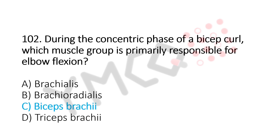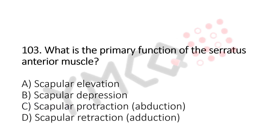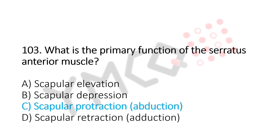Now let's move to question number 103. What is the primary function of the saratis anterior muscle? Option A, scapular elevation. Option B, scapular depression. Option C, scapular protraction or abduction. Option D, scapular retraction or adduction. And the answer is Option C, scapular protraction.